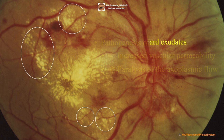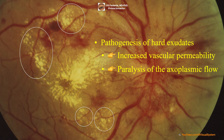The pathogenesis of hard exudates involves two mechanisms. First, increased vascular permeability allows fluid and lipoproteins to leak into the retina, with subsequent resorption of edema resulting in precipitation of lipid residues in the outer plexiform layer. Second, paralysis of axoplasmic flow at the level of the ganglion cells, whose axons form the nerve fiber layer of Henle, hinders transport and drainage of waste substances, favoring their accumulation in Henle's layer.